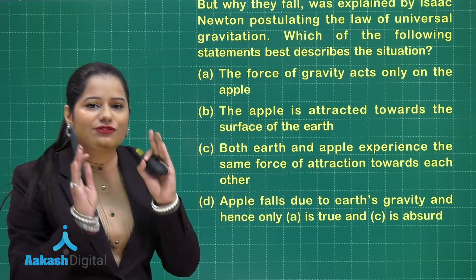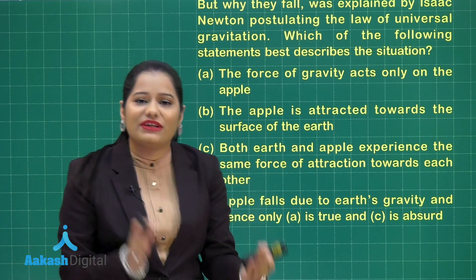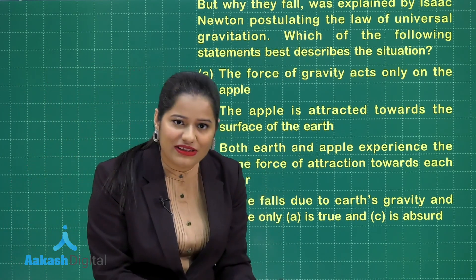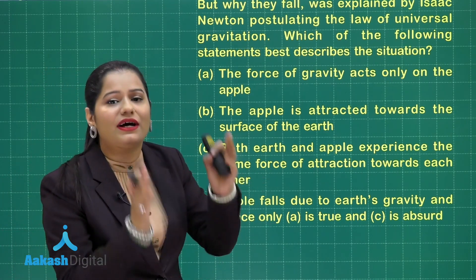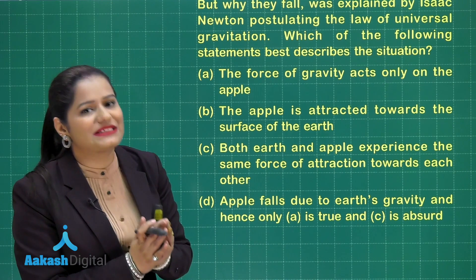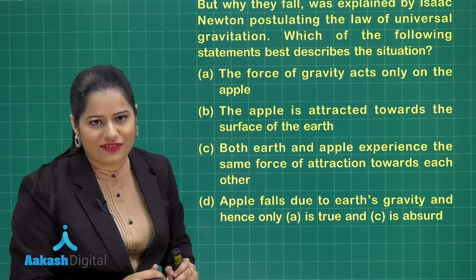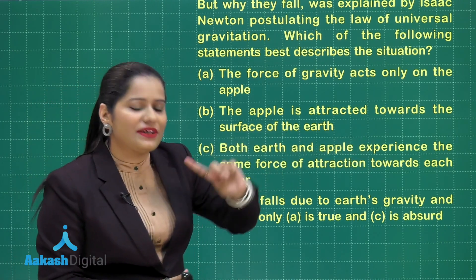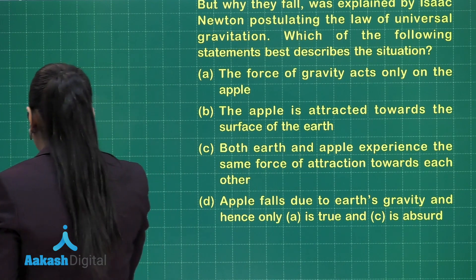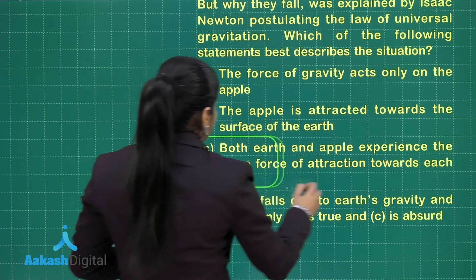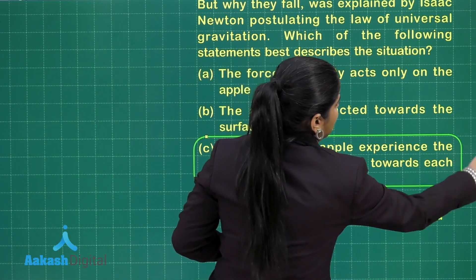Out of these four options, option C is the correct answer. From the law of gravitation, the force is attractive in nature and when it acts, it acts on both objects. The magnitude of this force is the same for both objects included in the interaction. So both earth and apple experience the same force of attraction towards each other — this statement is absolutely right.